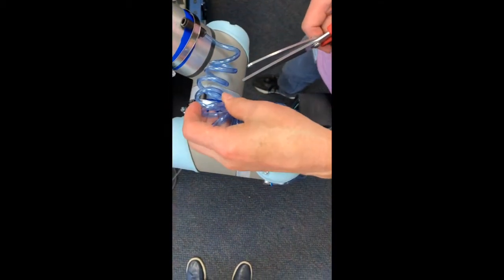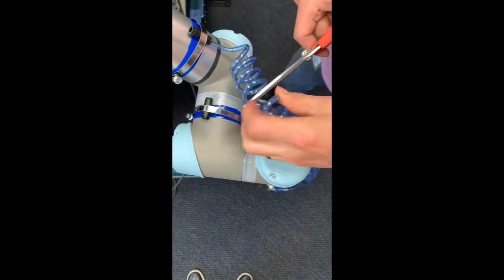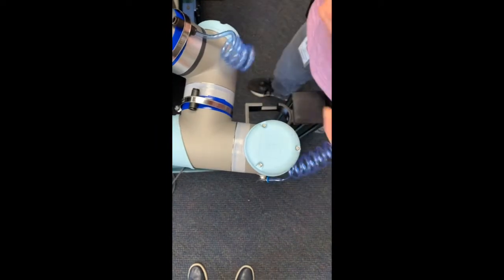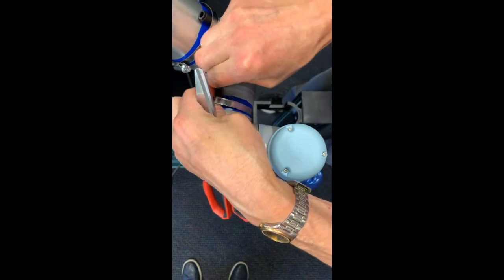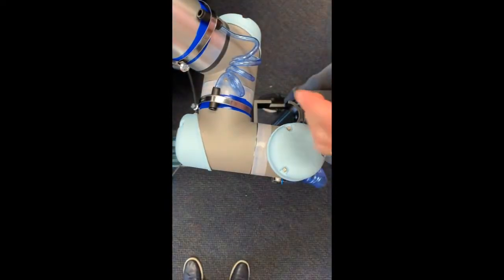This one doesn't need very much. It needs one, two, three, maybe four loops. Cut it. Insert it. Make sure you insert it really well in.